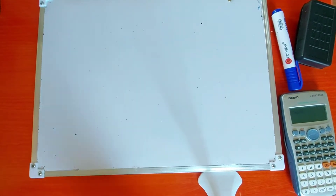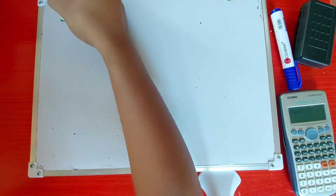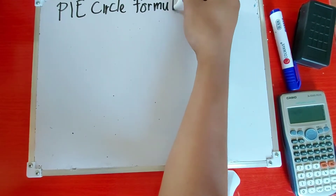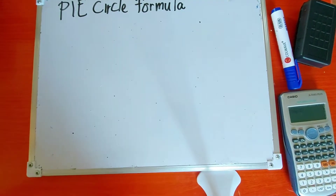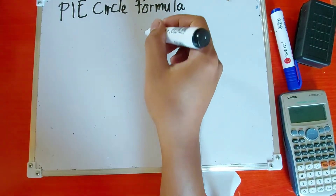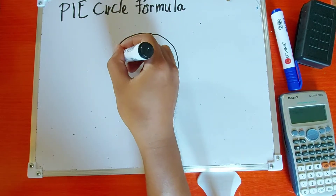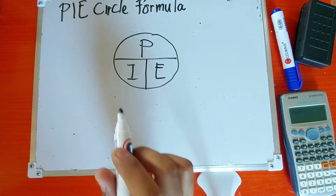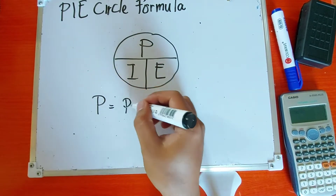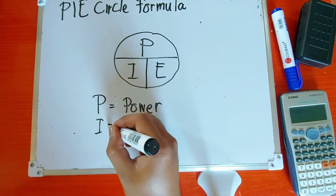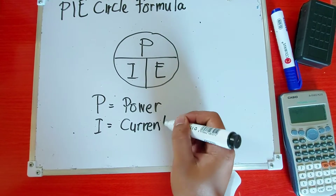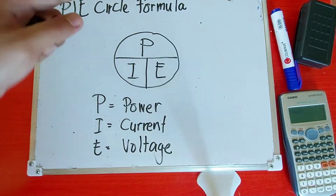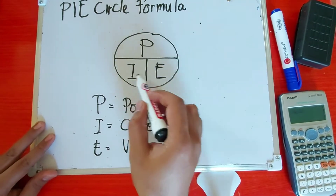Okay guys, so for today's video, ang topic natin para sa RME is PIE-circle formula. PIE-circle formula. So, where P is the power, I is current, then E is voltage. So, kaya siya tinawag na PIE-circle formula. P, I, E — ang binasa mo, PIE.